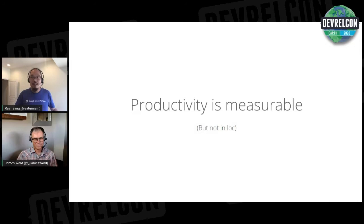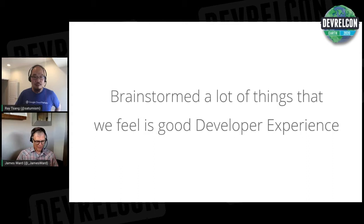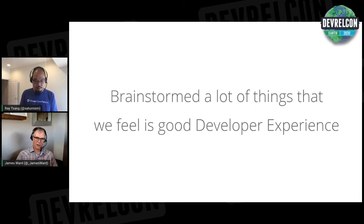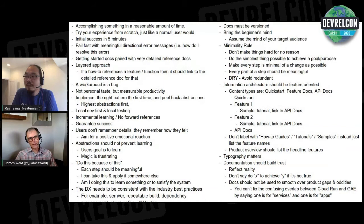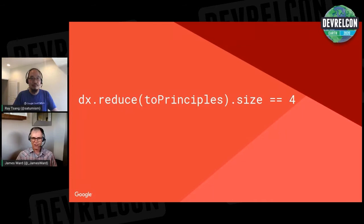Productivity is probably totally measurable — not by lines of code, but by the value you get from your work. With that insight, we thought: wouldn't it be nice if we had categories to measure developer experience that weren't just one-dimensional but provided two dimensions? We brainstormed a giant list of traits of good developer experiences, found patterns, and reduced it down to four core principles of developer experience.